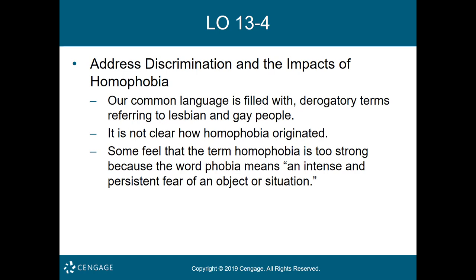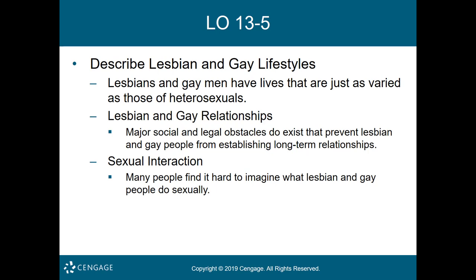Learning objective five is to describe lesbian and gay lifestyles. Individual relationships and lifestyles vary among gay and lesbian people just as much as they do among heterosexuals. Many lesbian and gay people live with a significant other; others live by themselves or with a heterosexual partner, friend, children, or family. Many have children. Same-sex couples face many of the same issues and hold many of the same values as their heterosexual counterparts. Major social and legal obstacles do exist that prevent lesbian and gay people from establishing long-term relationships.